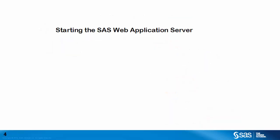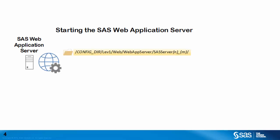Next, we'll look at the SAS web application server. To simplify things, we're going to split off the starting of the SAS web applications from the starting of the server, so here we're just concerned with the server process and not the applications deployed to it. The configuration for our SAS web application server is located in the web web app server sas_server_n_m directory — for example, sas_server_1_1 or sas_server_12_1. As with the SAS web server, within the SAS web application server instance directory we have a conf subdirectory. Within the conf subdirectory we have the main server.xml file.